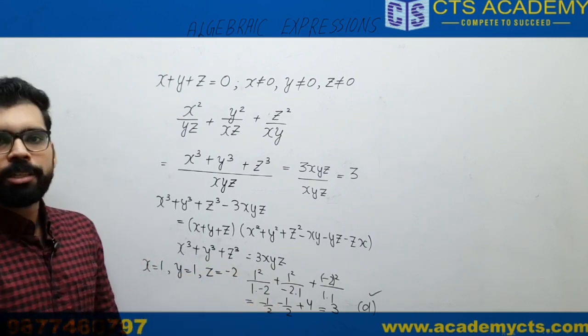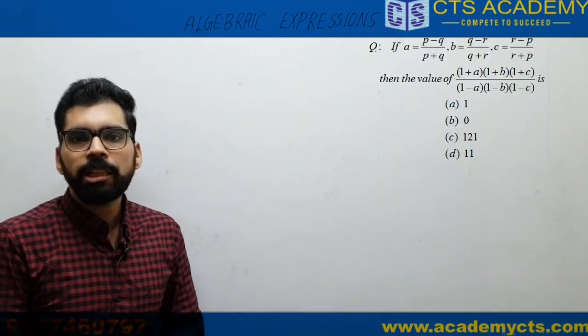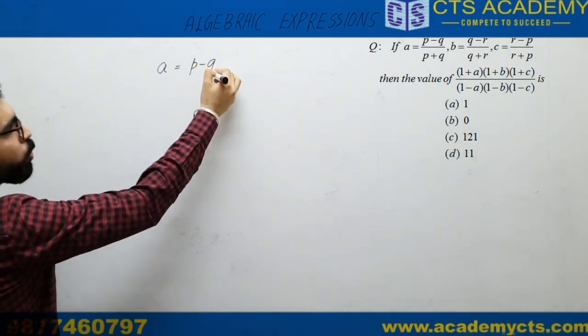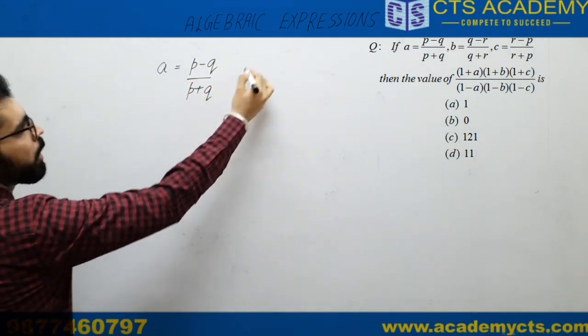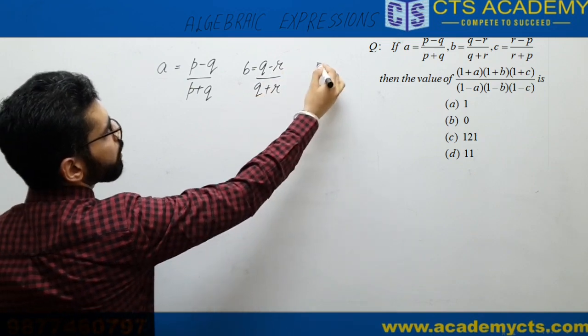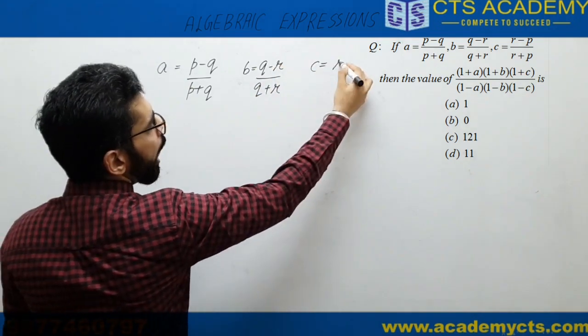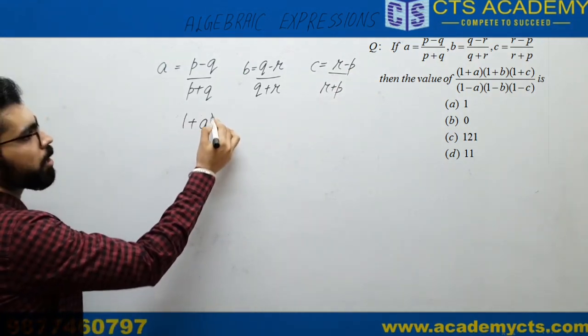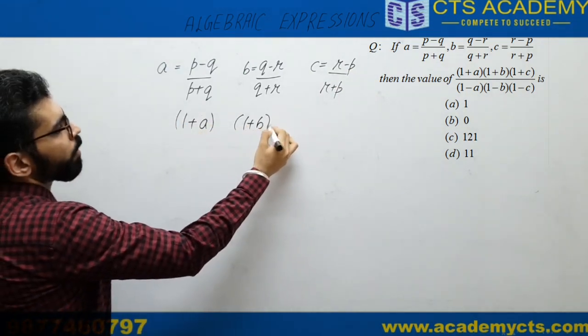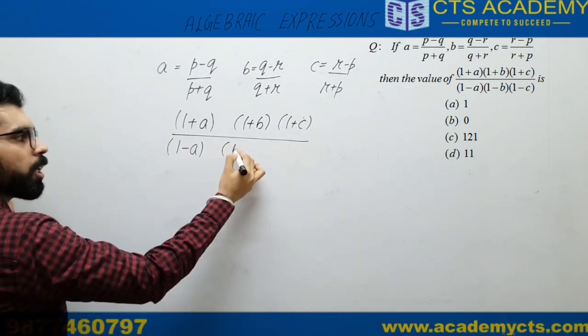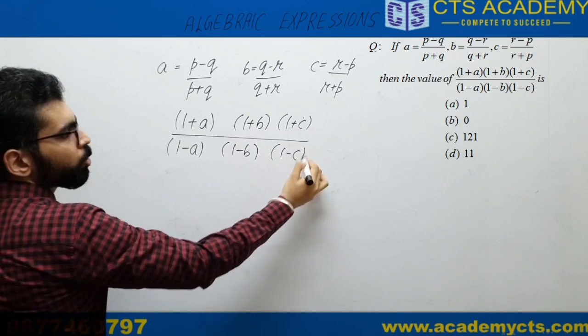Now let us move to the second question. It will be a little bit lengthy. They have given A = (P - Q)/(P + Q), B = (Q - R)/(Q + R), and C = (R - P)/(R + P). You have to find the value of [(1 + A)(1 + B)(1 + C)]/[(1 - A)(1 - B)(1 - C)]. One way is to put the values of A, B, C here and get the answer, but that method becomes quite lengthy.